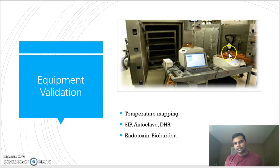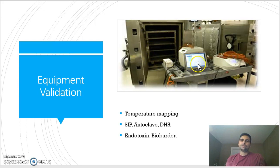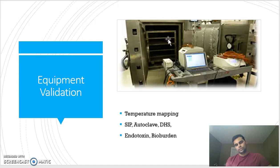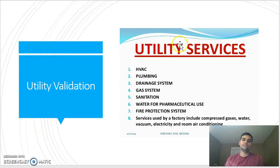To validate an autoclave, you use a data logger and thermocouples — temperature-sensing devices — that you place throughout the entire chamber to see the temperature profile at different locations and record the entire cycle. This gives you assurance that everything is running fine and you have a good picture of your autoclave's performance. Equipment validation activities include temperature mapping, SIP, autoclave, and DHS testing, as well as endotoxin and bioburden assessments.